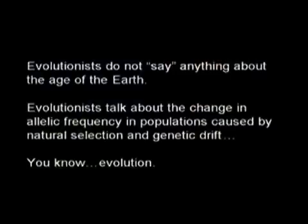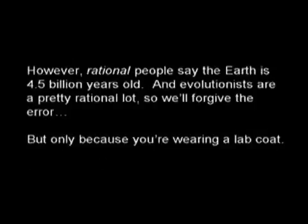Now, by comparison, looking at two timelines — one of what the Bible says, one of what evolutionists say. Evolutionists do not say anything about the age of the earth. Evolutionists talk about the change in allelic frequency in populations caused by natural selection and genetic drift — you know, evolution. However, rational people say the earth is 4.5 billion years old. And evolutionists are a pretty rational lot, so we'll forgive the error. But only because you're wearing a lab coat.